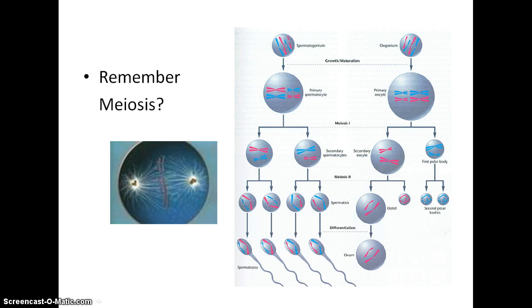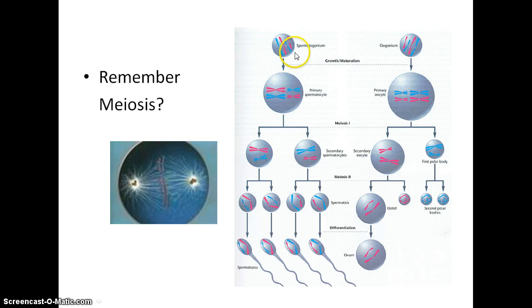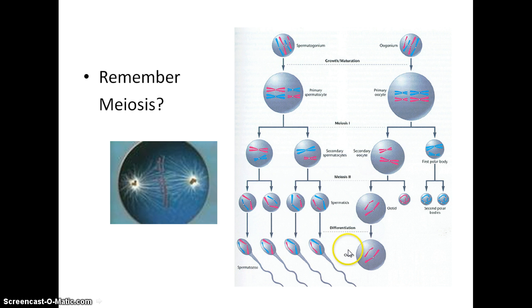Now we're going to pause and think back to meiosis. Meiosis, this process of creating gametes that are haploid — having half the chromosome number — is going to be really important in understanding how traits get passed from parents to offspring. In order to make sperm, if you're a male, or eggs, if you're a female, you go through this special cell division called meiosis. The result is haploid gametes, cells that have half the chromosome number, and these are what gets passed on to offspring.